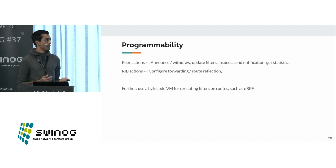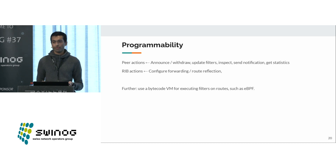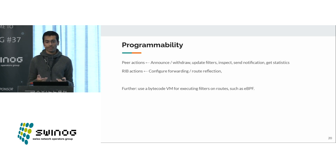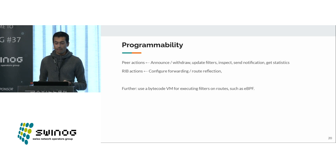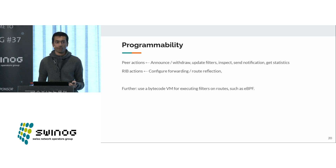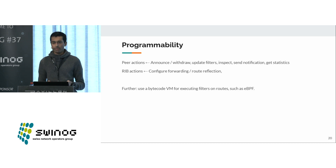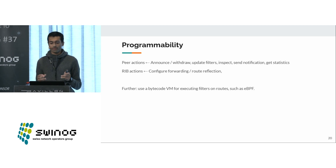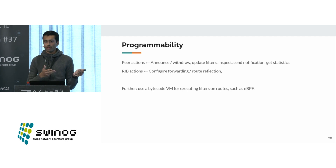And programmability: I really want to have first-class support for things like modifying what routes are announced to peers, maybe even sending individual messages to peers by making an RPC to the BGP implementation. Getting notifications and statistics out for monitoring would be really useful. Especially for different use cases like operating a route reflector, where you want more fine-grained and software-defined control of which routes get sent to whom, this could be very useful. Another idea was to use something like eBPF to have small bytecode programs sent to the server that get executed on each route update — for example, to decide what to do with it for more advanced filtering.